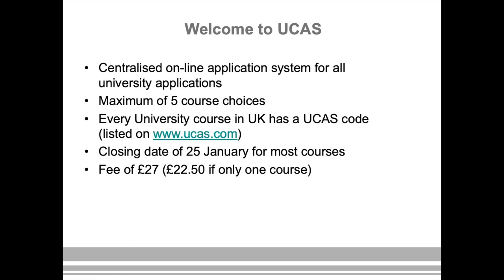In the rest of this video we're going to focus on how you set up an online UCAS account and complete each aspect of the application form. In the UCAS process you can apply for up to five different courses. The only exception is if you're applying for medicine, dentistry, or veterinary science, where you are only allowed to apply to up to four of those courses. Students applying for those subjects can put a fifth choice, but it must be for a different course — it can't be another medical, dentistry, or veterinary science school.